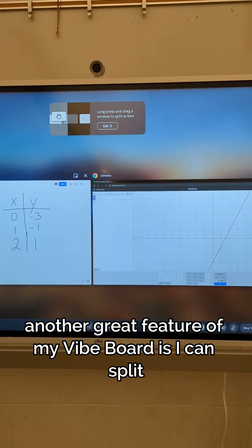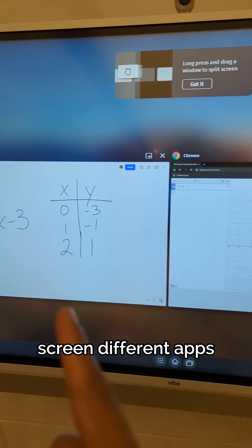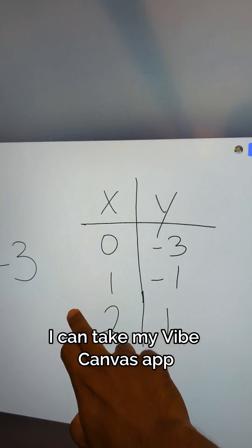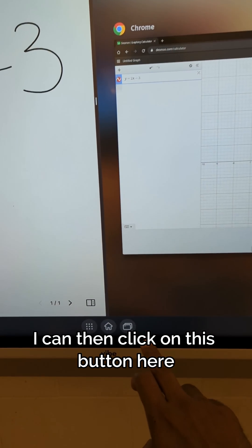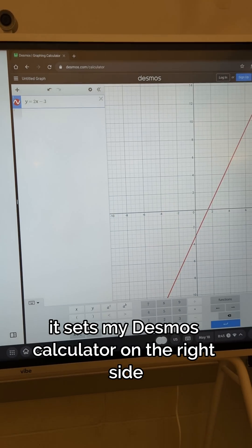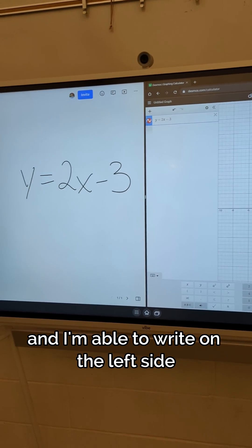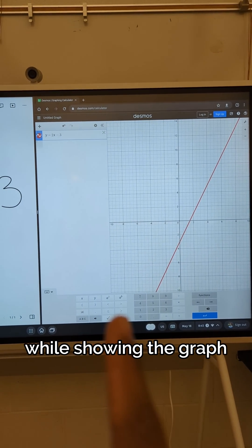Another great feature of my Vibe board is I can split screen different apps. I can take my Vibe Canvas app, set it to the left side, I can then click on this button here, it sets my Desmos calculator on the right side, and I'm able to write on the left side while showing the graph.